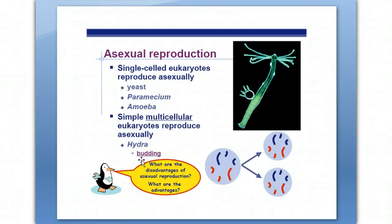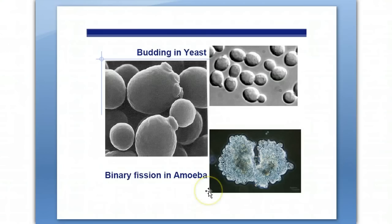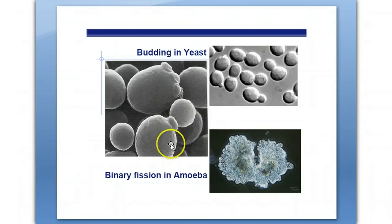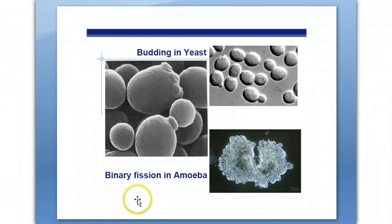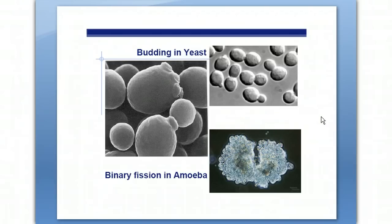This process of asexual reproduction where you grow a new multicellular organism with mitosis is called budding. Here's budding in yeast — basically making a copy by mitosis that's exactly identical to the cell it came from. The word we use for single-celled organisms doing mitosis, making an exact copy of themselves, is called binary fission. Here we have binary fission of amoeba, making two copies from one — two cells from one cell.